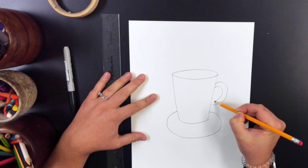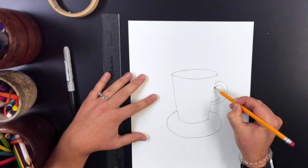If you would like to add a handle to your mug, you can. And that's just a C with another C on the inside. I'm going to erase my mistake. That is why we use a pencil.